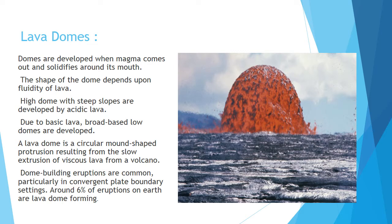The first volcanic landform is lava domes. You know the dome shape — so when a volcano erupts and this dome shape is created, we call it a lava dome. Domes are developed when magma comes out and solidifies around its mouth. The shape of the dome depends upon the fluidity of the lava. High domes with steep slopes are developed by acidic lava. So whenever the lava is fluid and acidic and gets solidified around the mouth, it creates a lava dome landform.